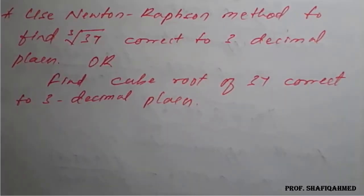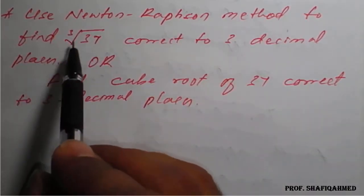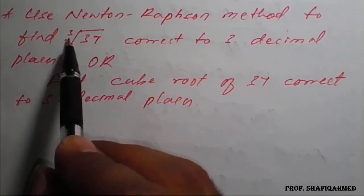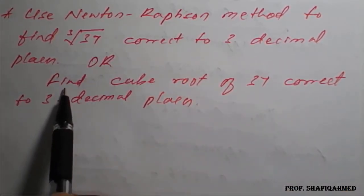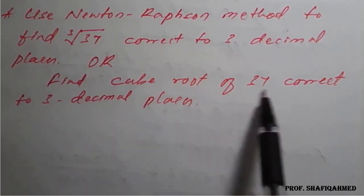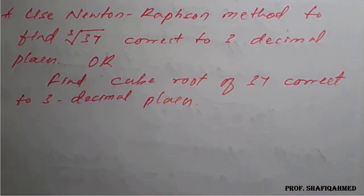Hello students. In this lecture, we will see a problem based on Newton-Raphson method. The problem is: use Newton-Raphson method to find the cube root of 37, correct to 3 decimal places. They may also simply ask: find the cube root of 37 correct to 3 decimal places. This is a very important question from an examination point of view.